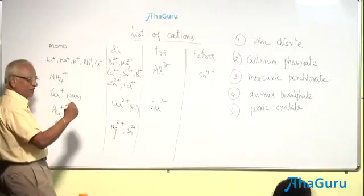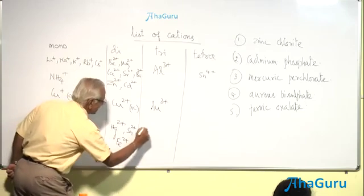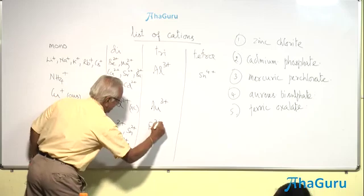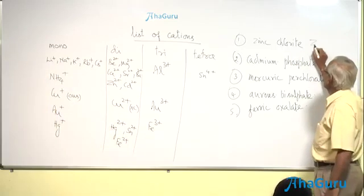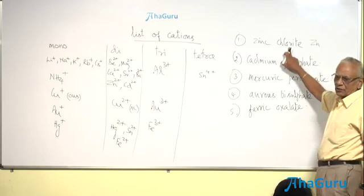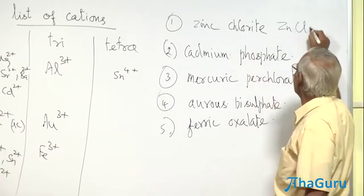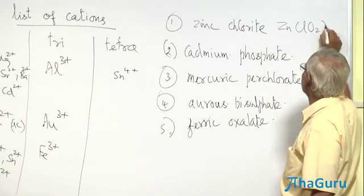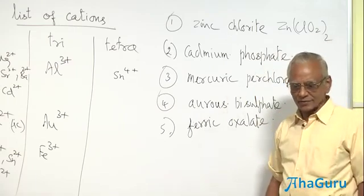Table - iron has got variable valency, Fe2+, Fe3+. Zinc we know, Zn2+. Chlorite is going to be a salt of chlorous acid, HClO2, ClO2-, valency 1. Zn(ClO2)2.